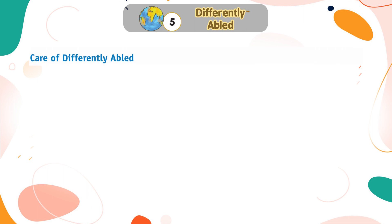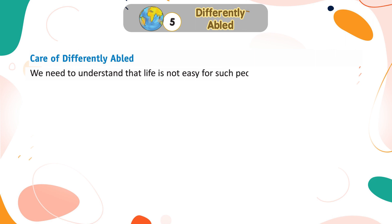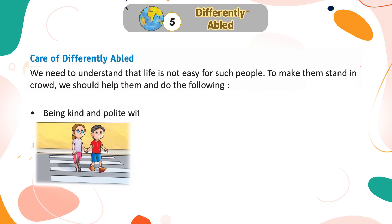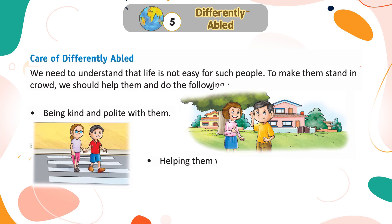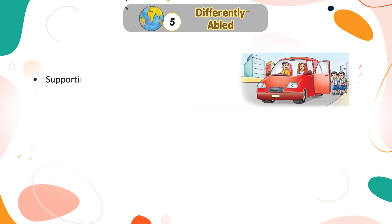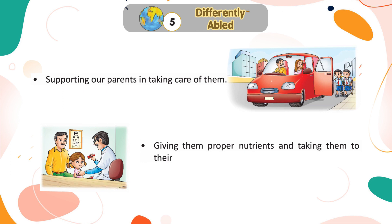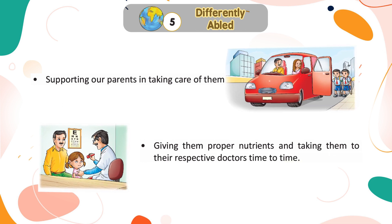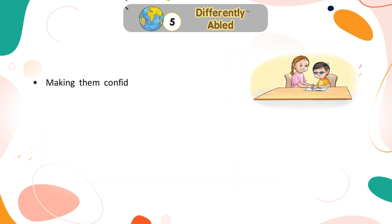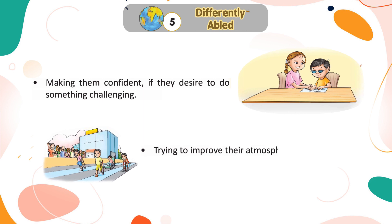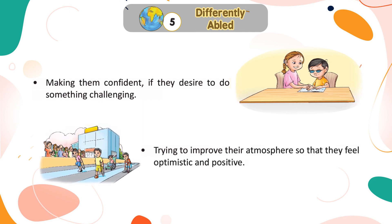Care of differently abled. We need to understand that life is not easy for such people. To help them stand in the crowd, we should do the following: be kind and polite with them; help them whenever they need us; support our parents in taking care of them; give them proper nutrients and take them to their respective doctors from time to time; make them confident if they desire to do something challenging; and try to improve their atmosphere so that they feel optimistic and positive.